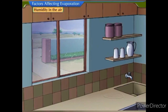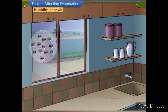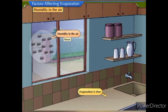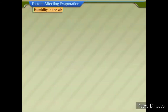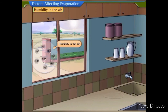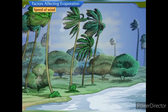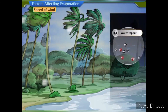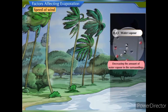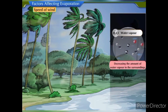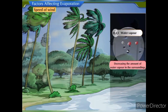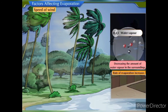Humidity in the air: humidity is the amount of water vapour in the air. When the humidity in the air is more, evaporation is slow. When the humidity is less, evaporation is fast. Speed of wind: when the speed of wind increases, the particles of water vapour move away with the wind, thus decreasing the amount of water vapour in the surroundings and increasing the rate of evaporation.